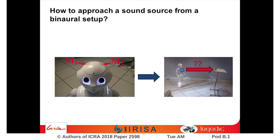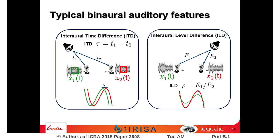Generally, sound localization features in binaural setups are related to the sound direction. This is the case of the inter-aural time difference or the inter-aural level difference, also known as ITD and ILD. ITD is the time delay between the sound arrival at each microphone, while ILD is the ratio of sound level in each microphone.